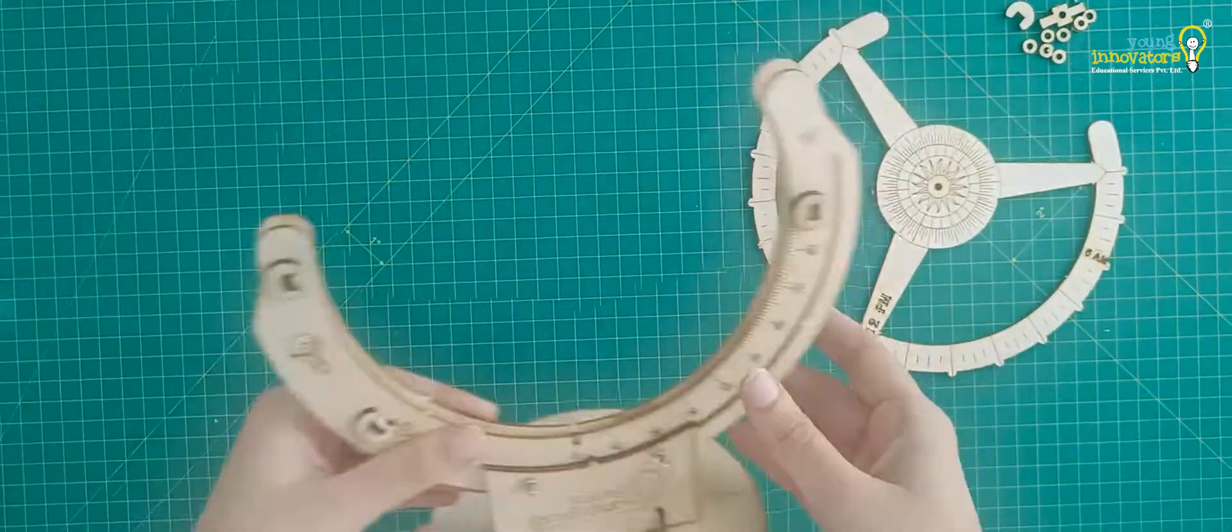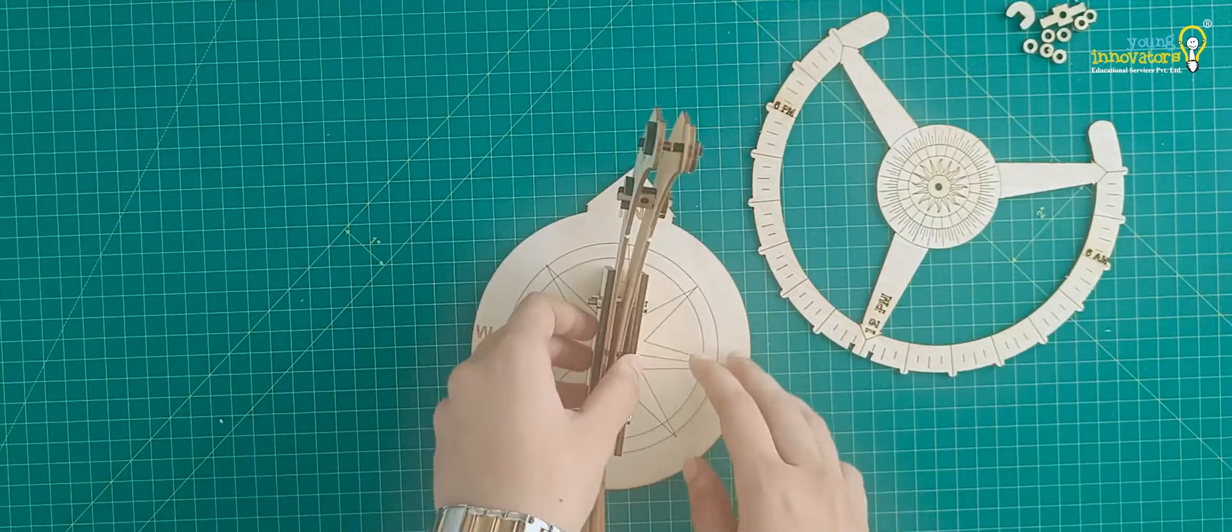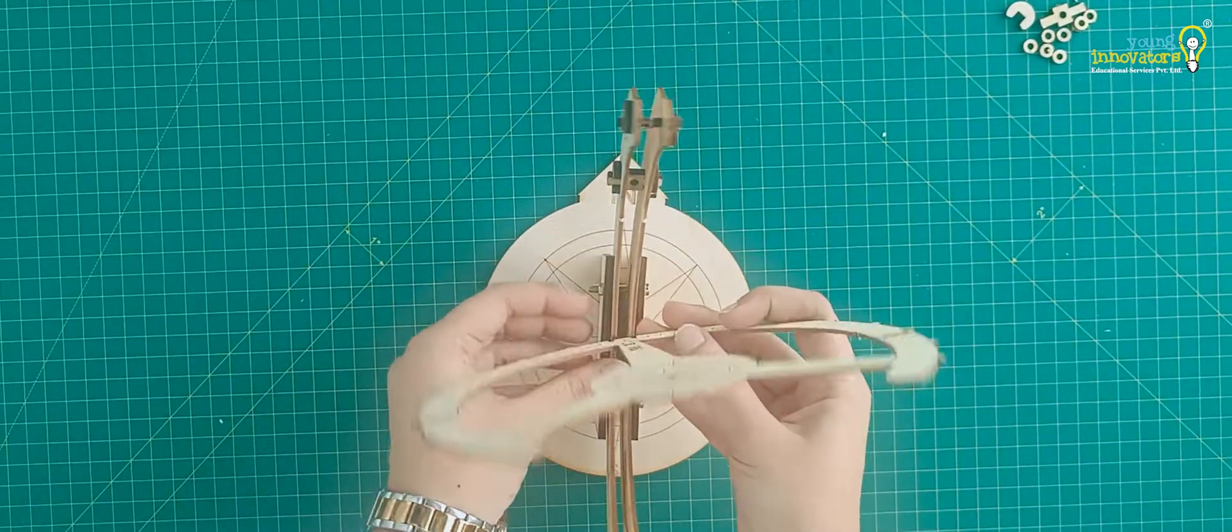Take the dial and fix it into the designated slots on the arm plate such that the time readings face the north direction on the base plate.